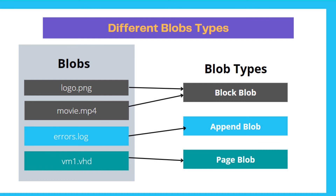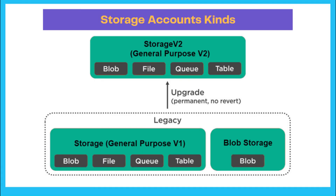Now let's look at the different blob types. There are three types: Block Blob, Append Blob, and Page Blob. Block blobs are stored as discrete blocks and are ideal for static content like images and logos. Append blobs are used for data that is continuously appended, such as log files — new log entries are appended to the same file. Page blobs are used for virtual machine disk storage.